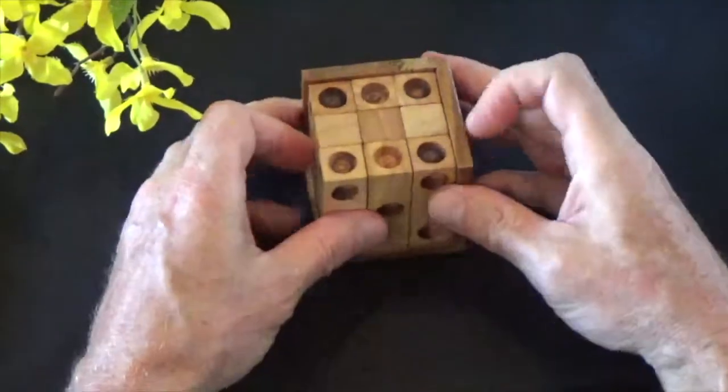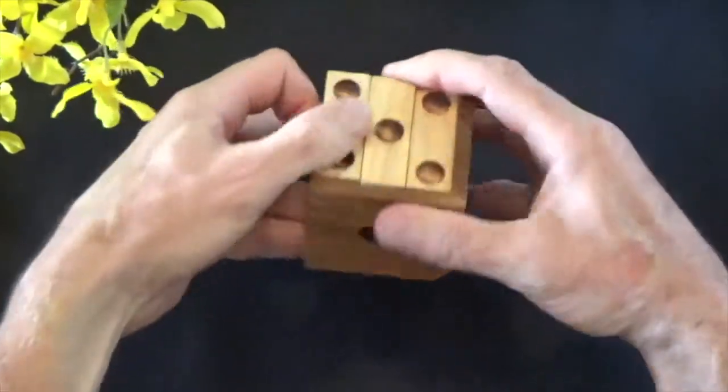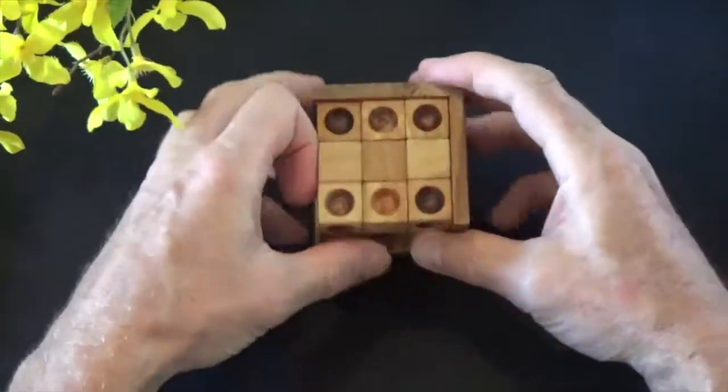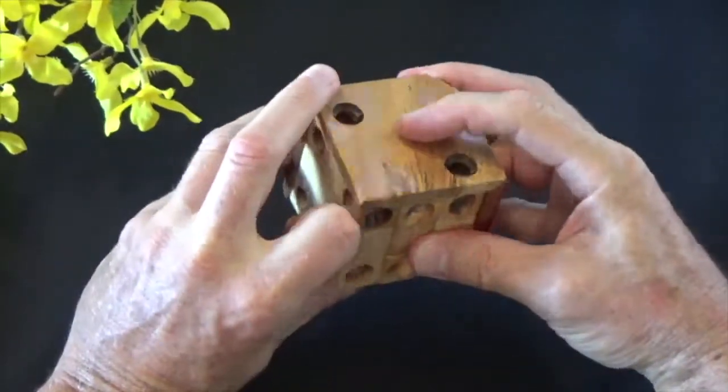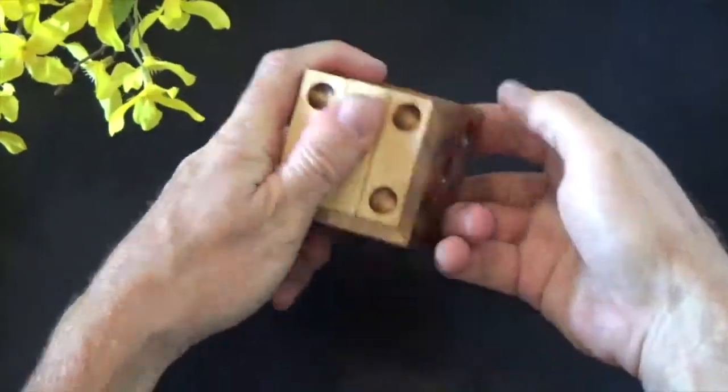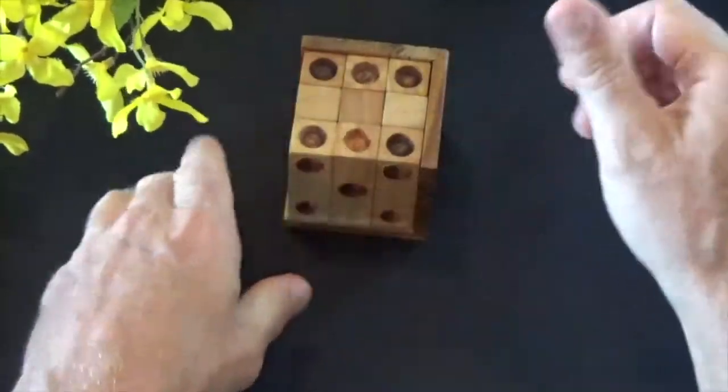There's the six. Other side there's the one. There's the five. There's the two. There's the four. And there's the three. There you have it. The dice cube challenge.